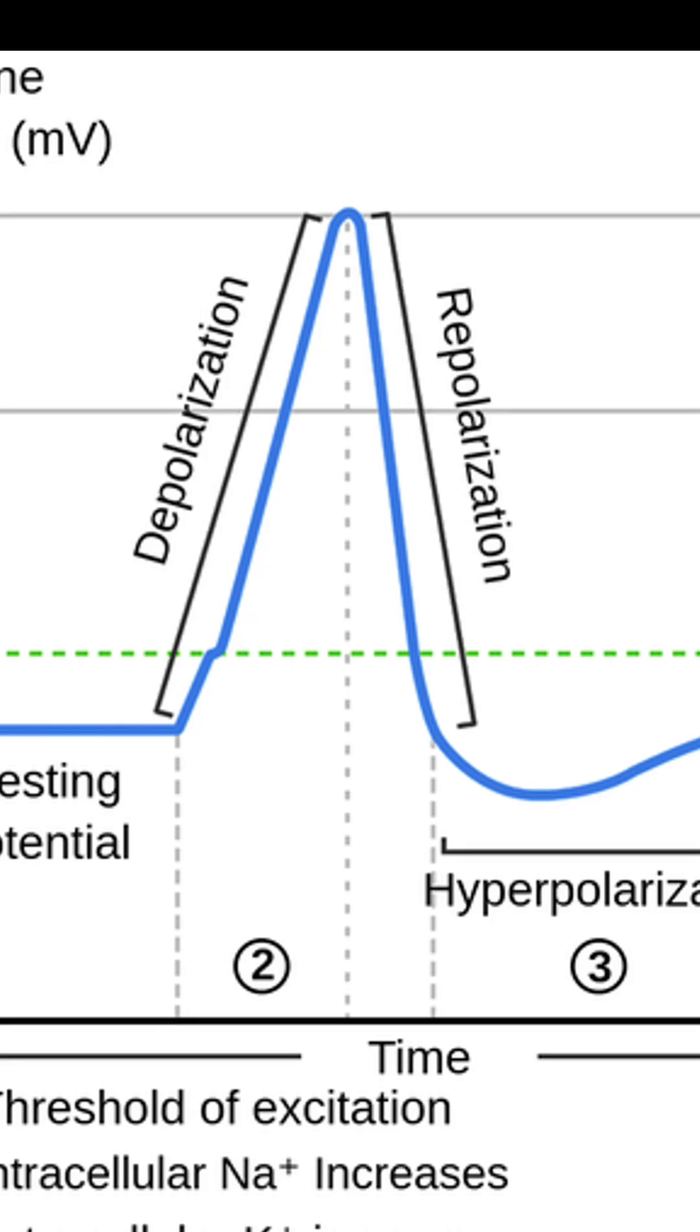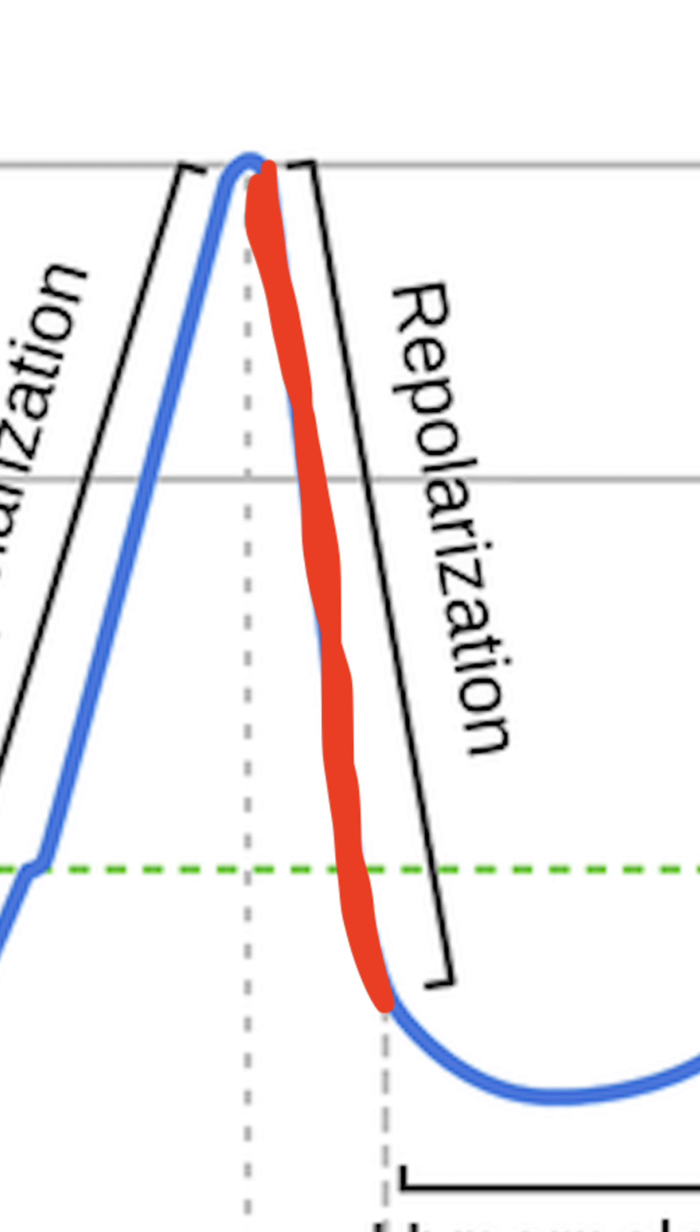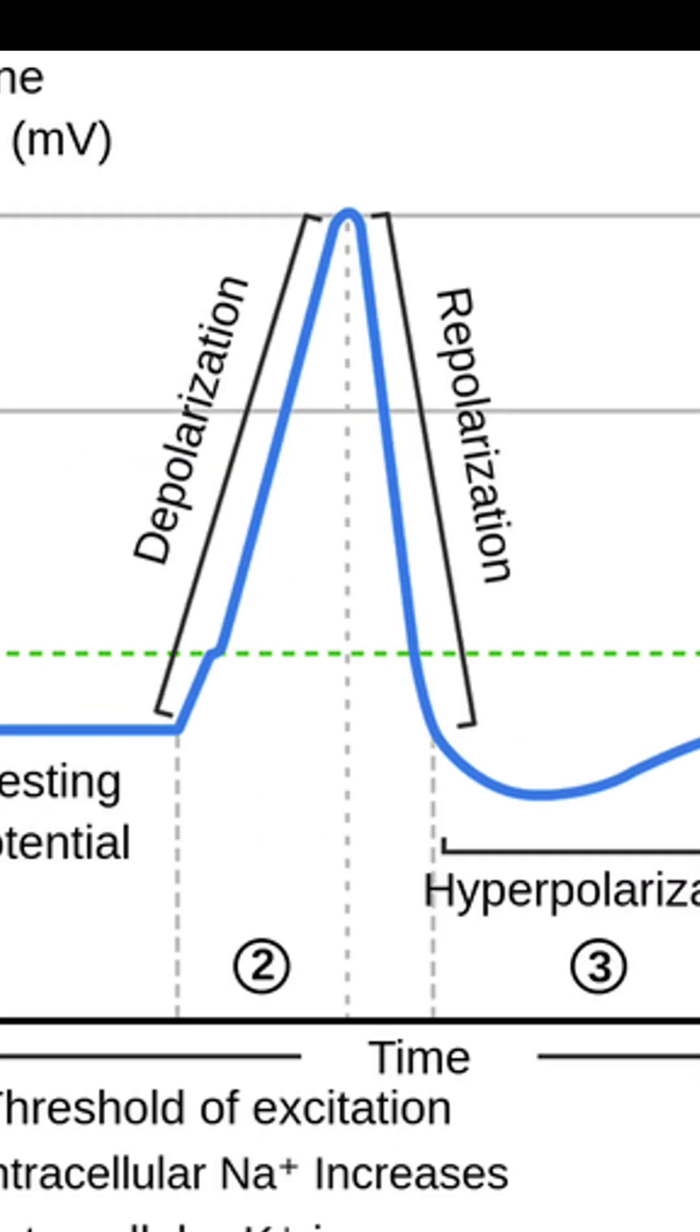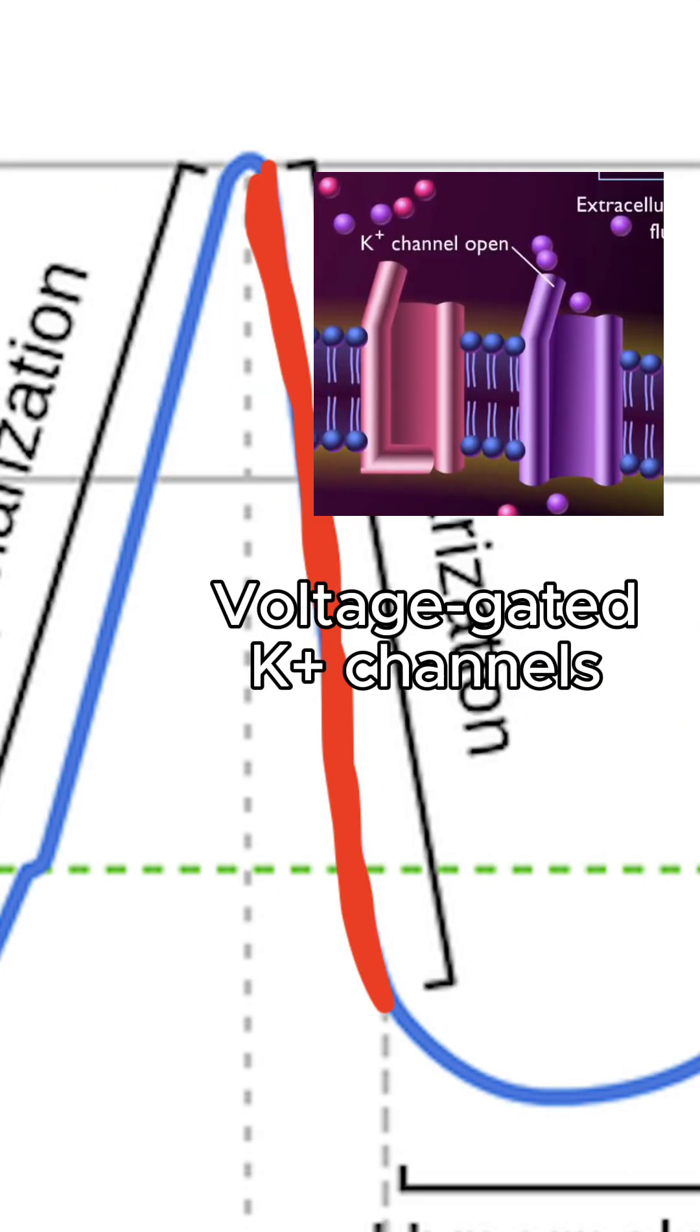If you've ever taken a class on neurobiology or about action potentials, you know that the depolarization and repolarization steps of the action potential are driven by the opening of voltage-gated sodium and potassium channels.